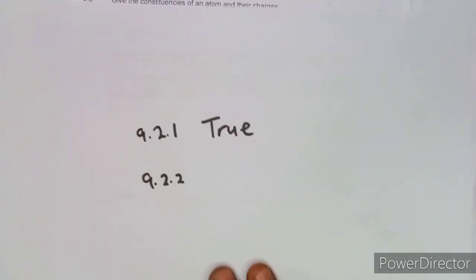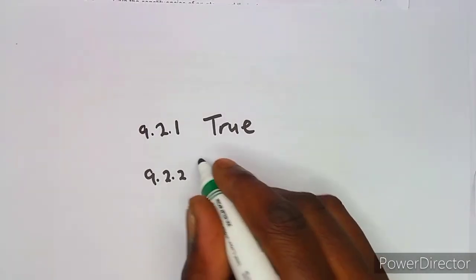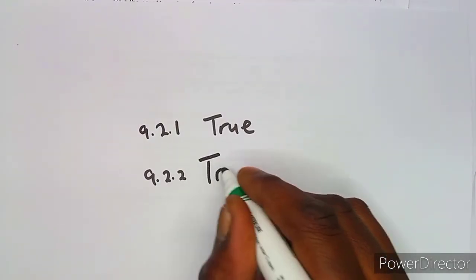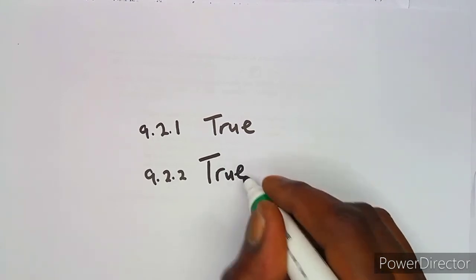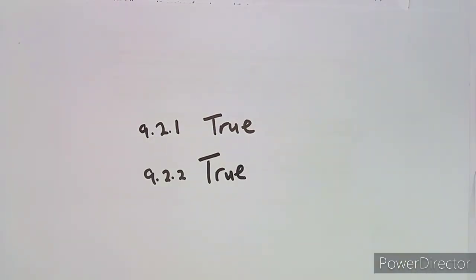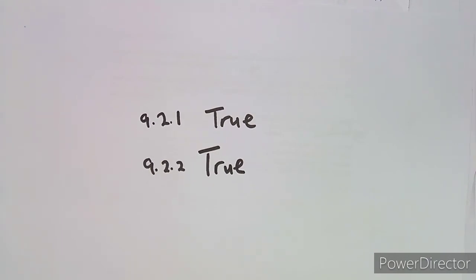You cannot just write true or false without doing the calculations — that's why it's worth two marks. You have to prove whatever you are writing, not just guess.